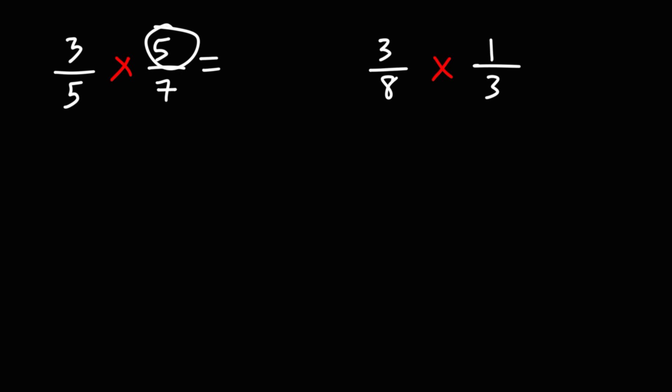Notice that we have a 5 on top of the second fraction and a 5 on the bottom of the first fraction. When you have the same number on opposite sides of either the same or different fractions when you're multiplying, you could cancel those identical numbers. So what we have left over is 3 over 7. So that's the answer for the first example.